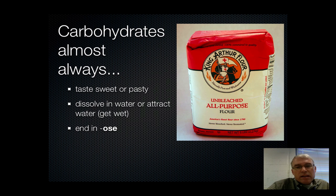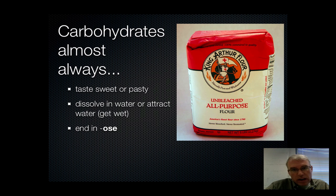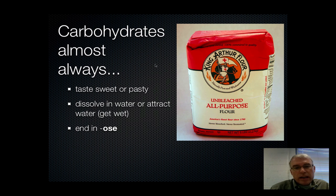Carbohydrates can almost always be identified by their taste and texture. They're usually sweet or at least pasty in the mouth. They dissolve in water like sugars, or they attract water and mix with water very well, like flour and rice — they absorb water and form hydrogen bonds. Most names for carbohydrates end in -ose. So if you see a chemical name with O-S-E at the end, we're almost always talking about a carbohydrate, probably some kind of sugar.